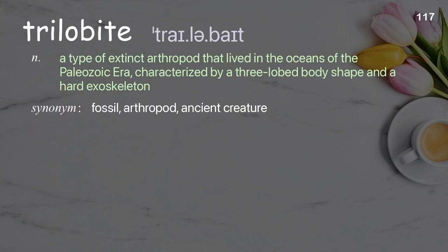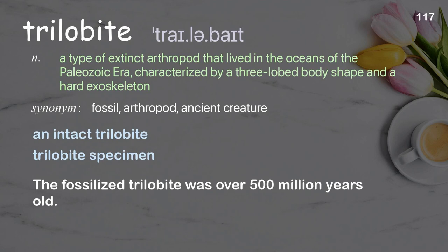Trilobite: a type of extinct arthropod that lived in the oceans of the Paleozoic era, characterized by a three-lobed body shape and a hard exoskeleton. Examples: an intact trilobite, trilobite specimen. The fossilized trilobite was over 500 million years old.